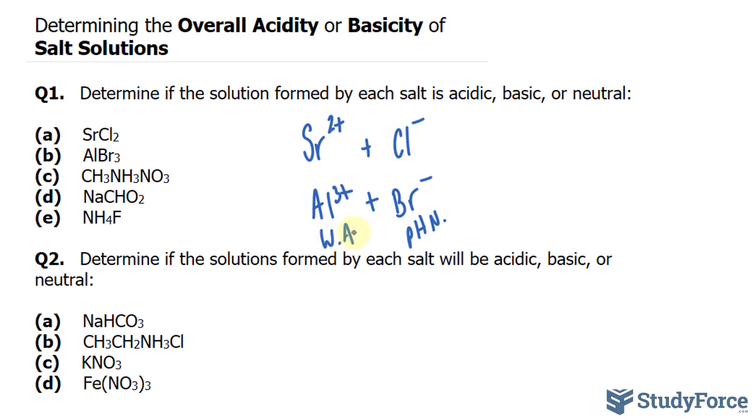So when a weak acid and a pH neutral molecule come together, it forms something that is acidic. Let's move on to question C.